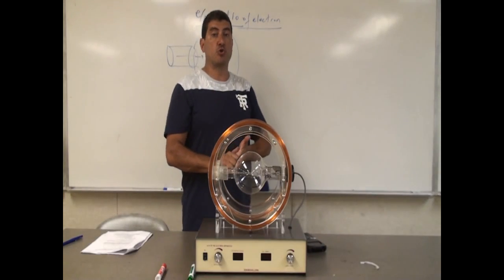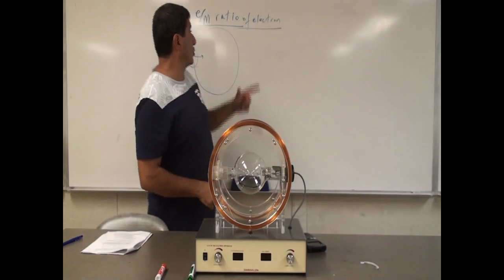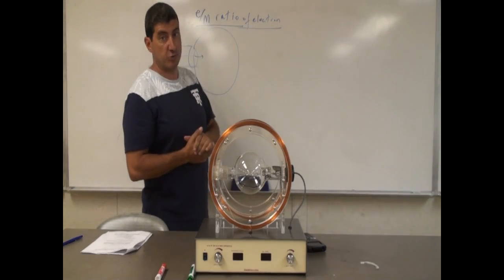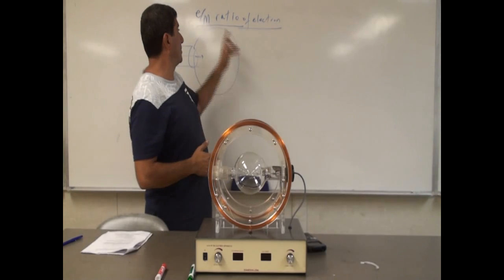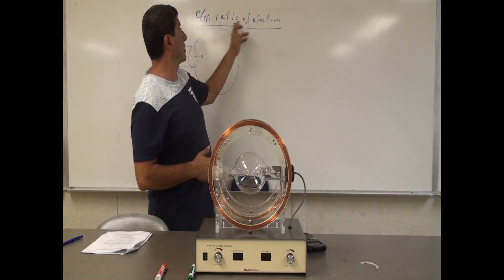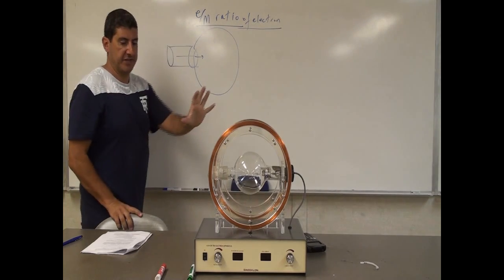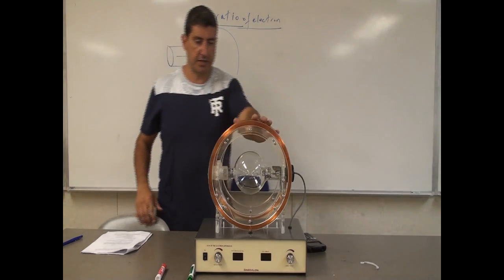Okay, welcome back. Now I'm going to do a good demo. It's called the electron charge-to-mass ratio of an electron, the E over M ratio of an electron. We have this equipment right here.